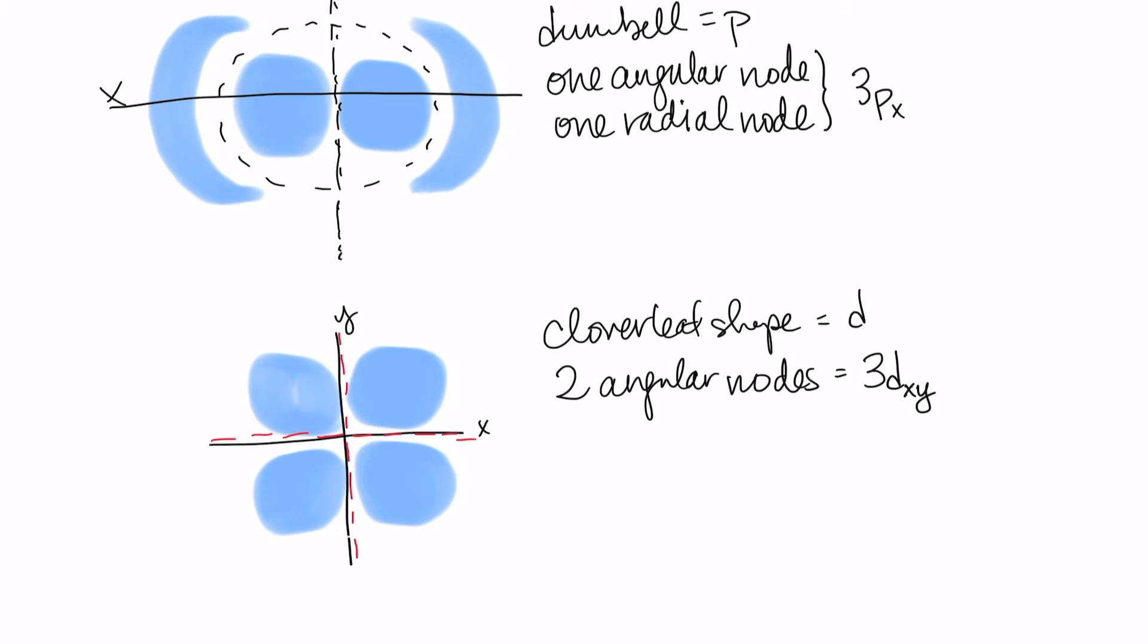So now on the screen, I have my 3px orbital and I have my 3d xy orbital. Both of these orbitals have two nodes. The 3px orbital has an angular node and a radial node. The 3d xy has two angular nodes. So those nodes are really important in terms of telling me what the principal quantum number is going to be. If I add up all the nodes together, then that will equal n minus 1.